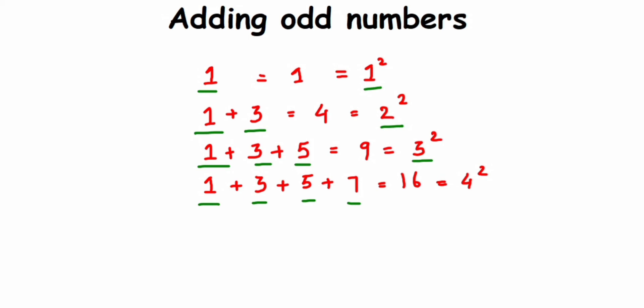So you don't have to just add up, just find how many odd numbers you're adding and then square it. That's it.